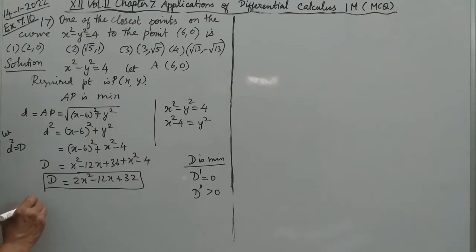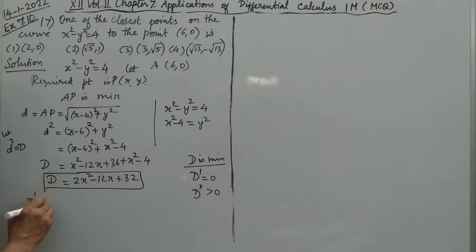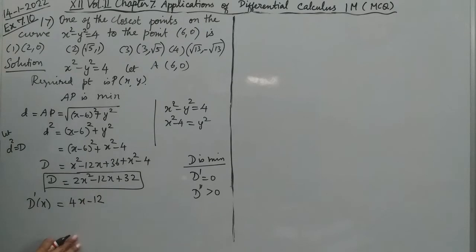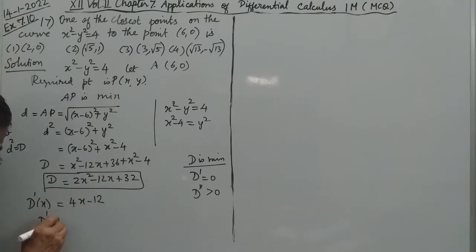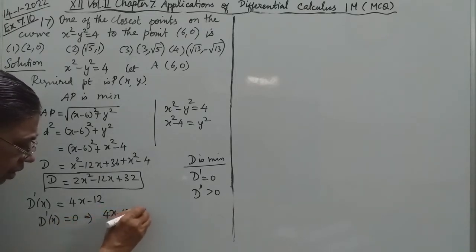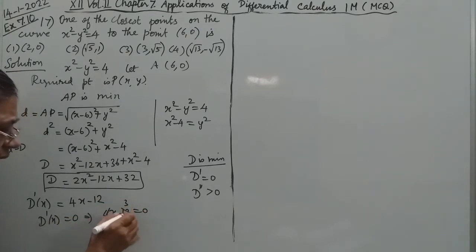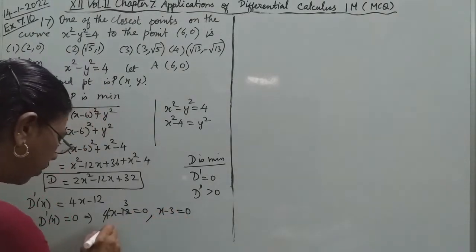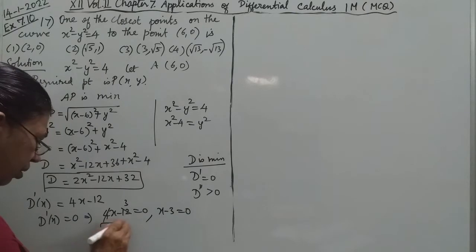Taking the derivative of D squared with respect to x: D dash of x equals 4x minus 12. Setting D dash equal to zero gives 4x minus 12 equals zero, which gives x equals 3.